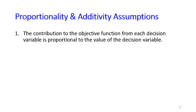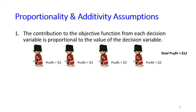Now let's talk about the assumptions. The first assumption is proportionality, which means the contribution to the objective function from each decision variable is proportional to the value of that variable. For example, if you produce one soldier the contribution is $3. The assumption says that if you produce four soldiers, the total profit is $12, because it is $3 for each soldier.